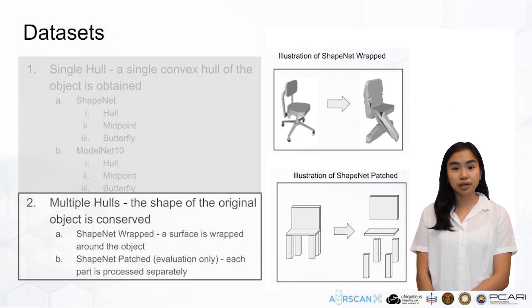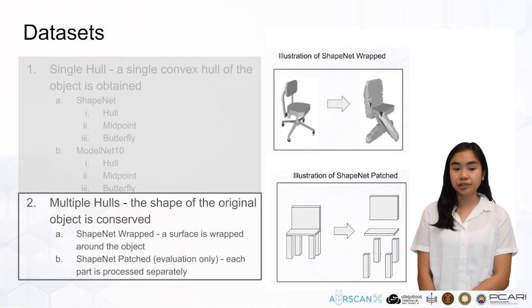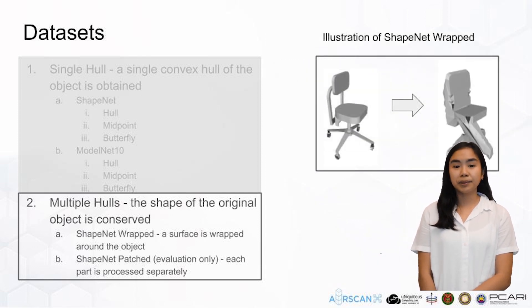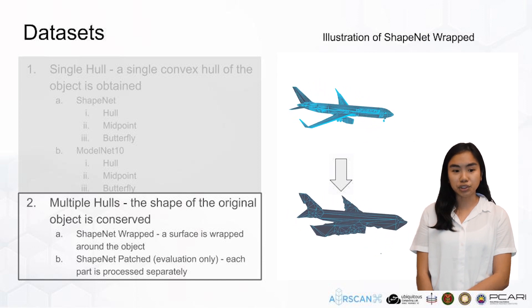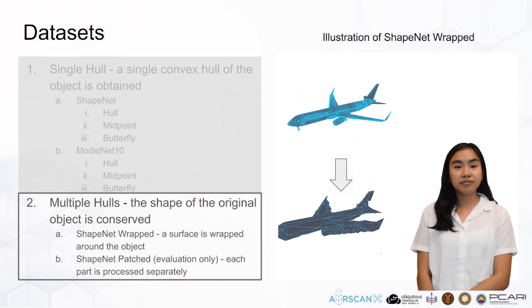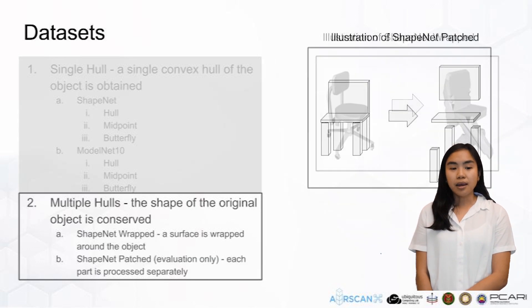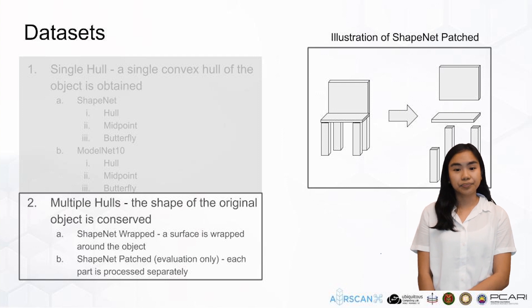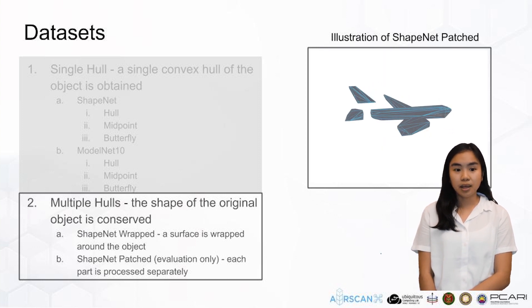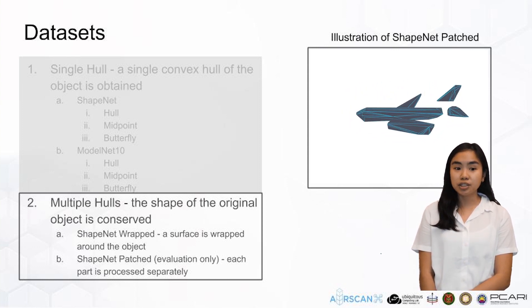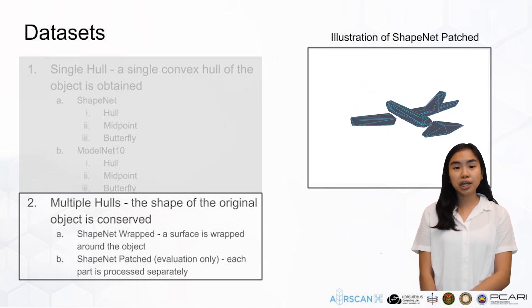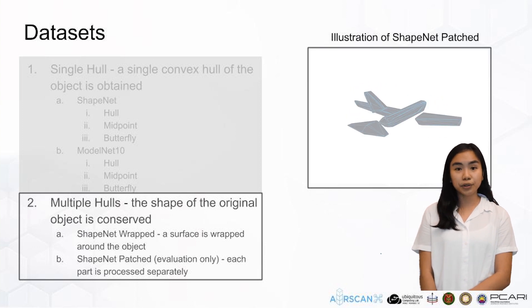Two variations were considered for multiple hulls. The first is ShapeNet wrapped, or wrapped, and the second is ShapeNet patched, or patched. The wrap dataset was generated by wrapping the closest surface around the mesh, using Blender meshing to create a single continuous surface. RAIN was retrained and evaluated independently on this wrap dataset. In contrast, no retraining was done for the patch dataset. The network trained on ShapeNet wrap was applied on the test split of the patch dataset, where each hull is independently processed by the network, demonstrating the ability to reconstruct a mesh by processing input by parts.